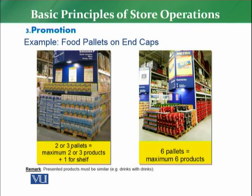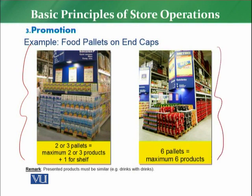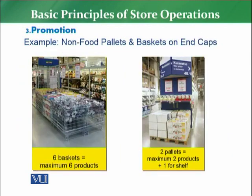Quickly let us look at an example for food. On the end cap, applying the rule we just read — for understanding the rule — you can see a display of two to three pallets. A maximum of two to three products are visible and there is one shelf. This is a very good example for food. Similarly, in another example, six pallets are placed — if there are six pallets, then there will be one product per pallet, which means six products. If there are four pallets, there will be four products. This is one of the rules for display.